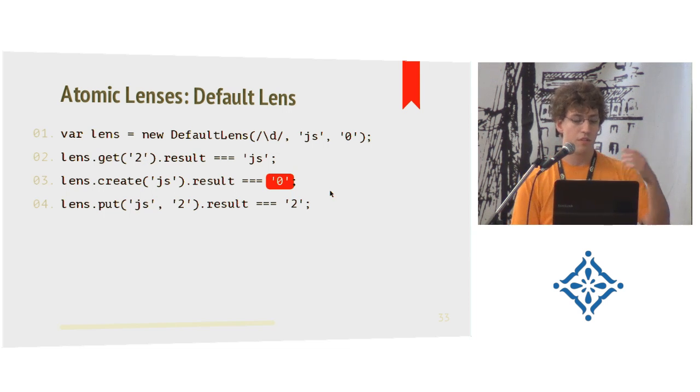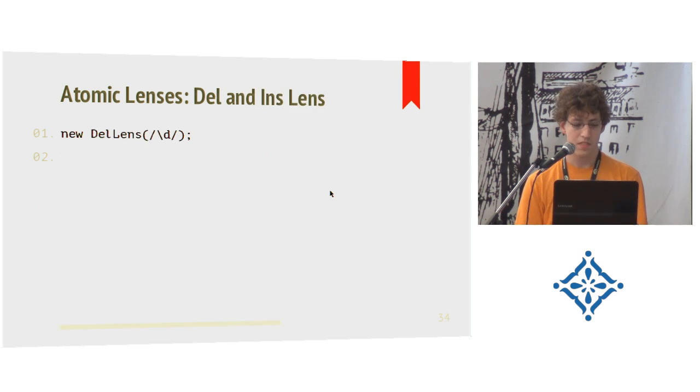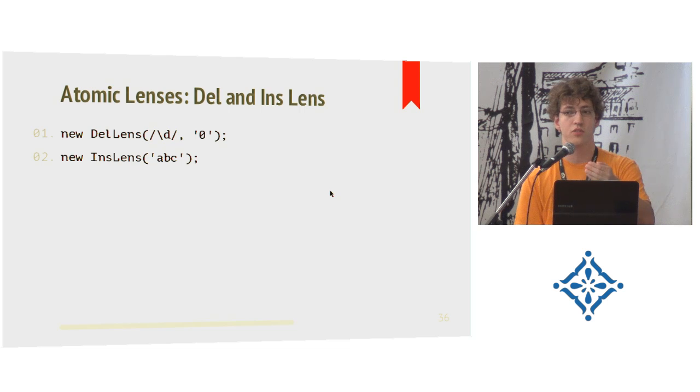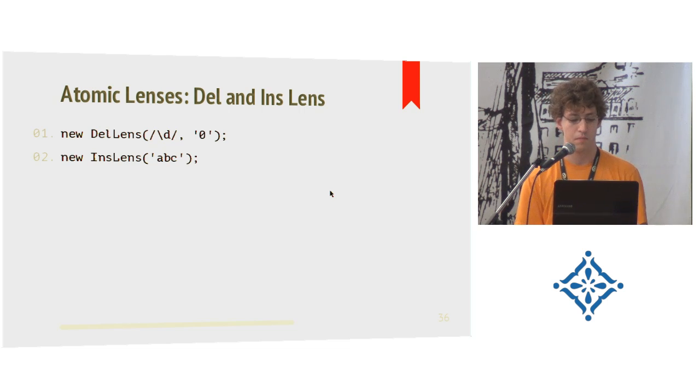So I don't want to bore you with going all those things because that's basically it almost. This is the foundation of all this. There are a few special cases which I quickly go through. It's the del lens, which is implemented like the default lens - it is based on it. It just deletes the regular expression from the input string but won't put anything into the output. We again need the default value of course in case of a create. The ins lens is the only one that doesn't take a regular expression as first argument because it just appends it to the output string, and if you transform it back, it just got deleted.